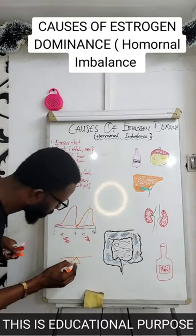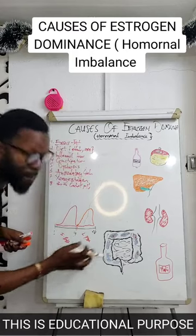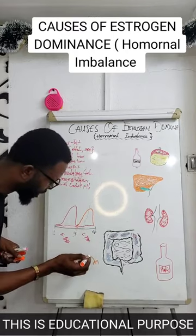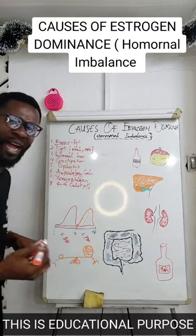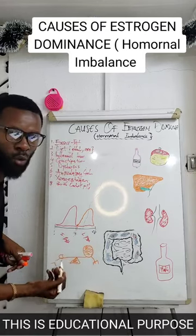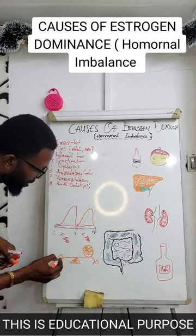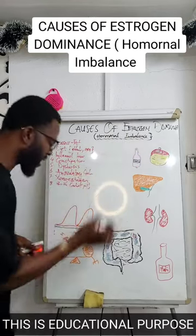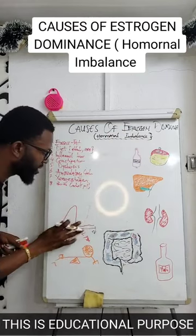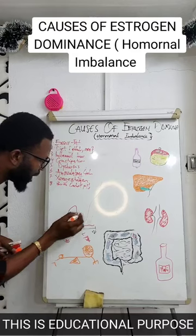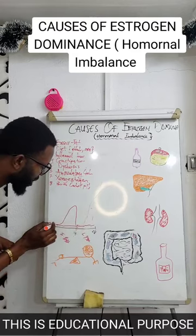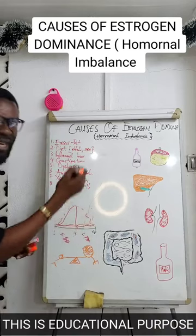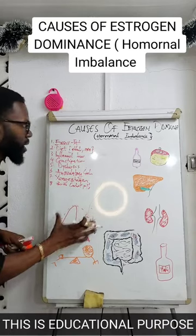When I draw this pivot right here and put progesterone and estrogen on either side, you can see they are balanced. But the moment estrogen becomes elevated, they are no longer balanced — estrogen is more than progesterone. We call this estrogen dominance. You can see progesterone going down whilst estrogen remains at that level.